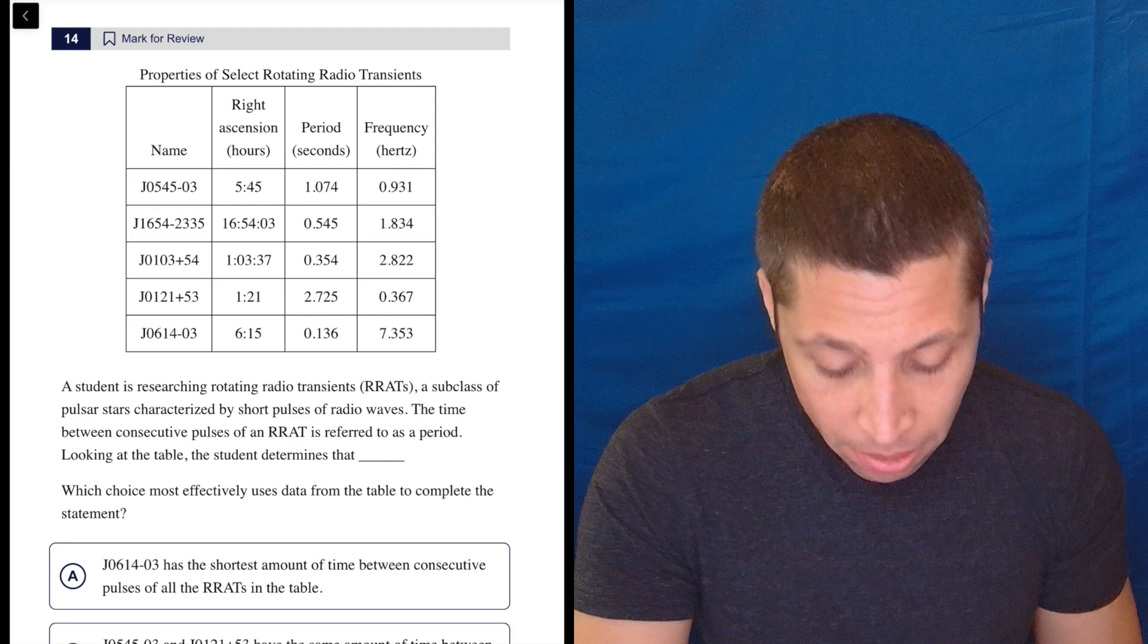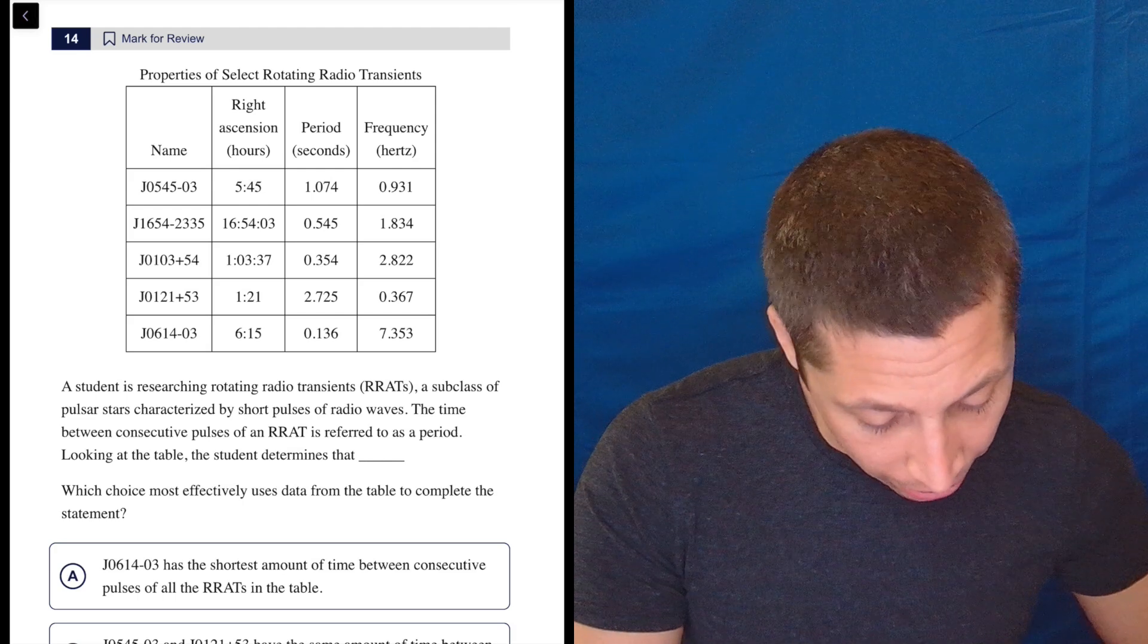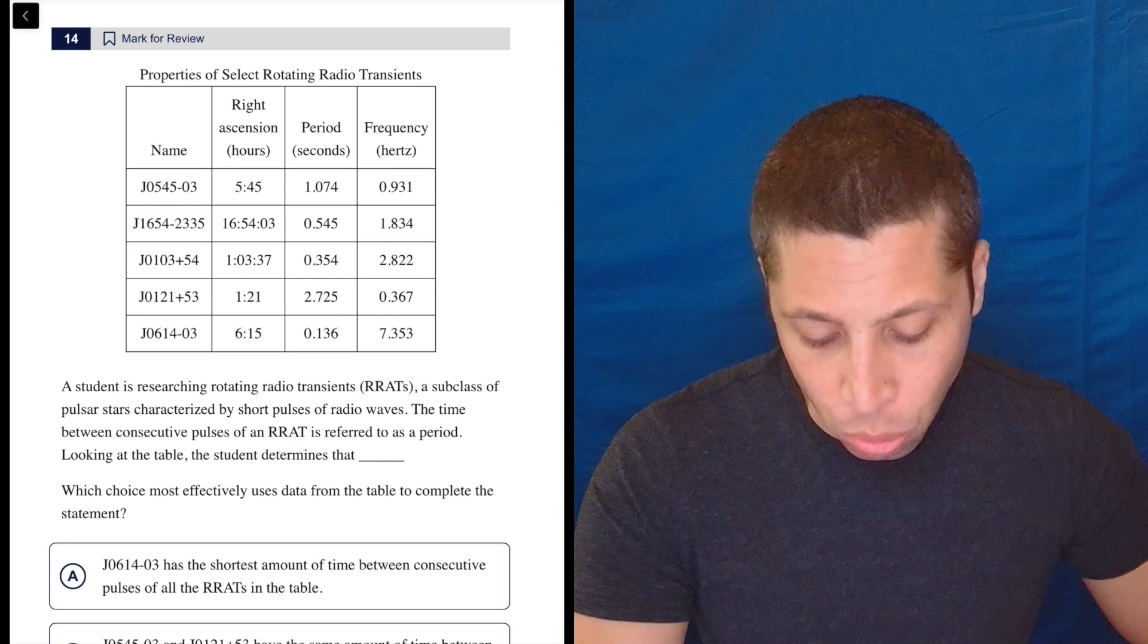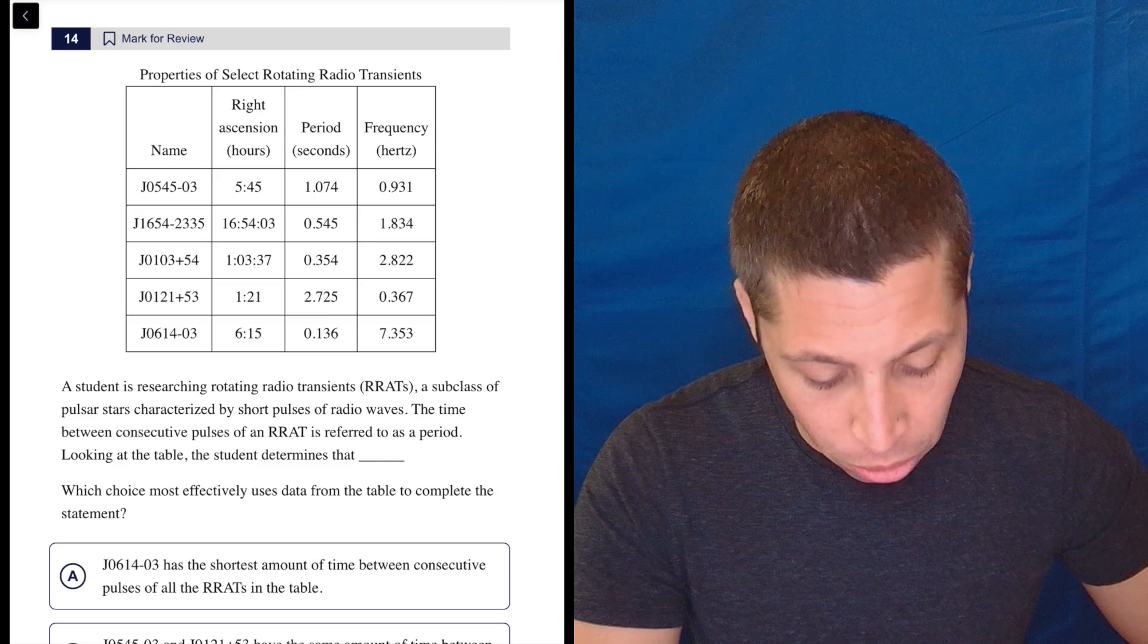Which choice most effectively uses data to complete the statement? The statement is short. A student is researching rotating radio transients, a subclass of pulsar stars characterized by short pulses of radio waves. The time between consecutive pulses of an R-rat is referred to as a period. Looking at the table, the student determines that.